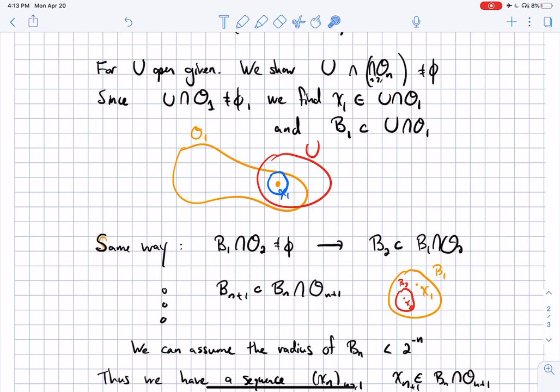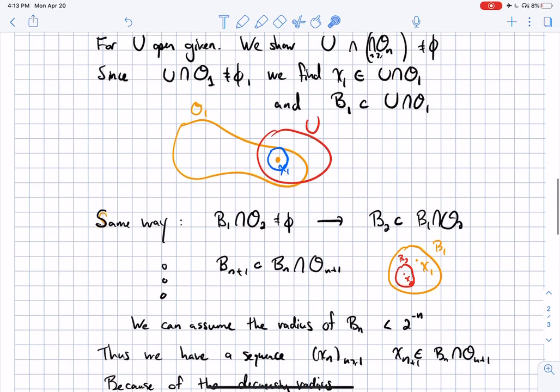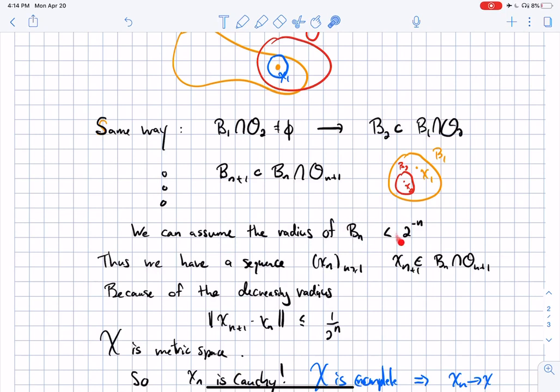That gives me an X2, which is in there, and that X2 must have a ball also included in that. So I have a ball B2, which is included in the ball B1, intersected with O2 et cetera. At the end of the day, you have a sequence of balls, the B's, and each of the balls has some X in these balls. I can take these balls as small as I want because I just want these balls to be included in the union. In particular, I can assume that the radius of Bn is smaller than 2 to the minus n.